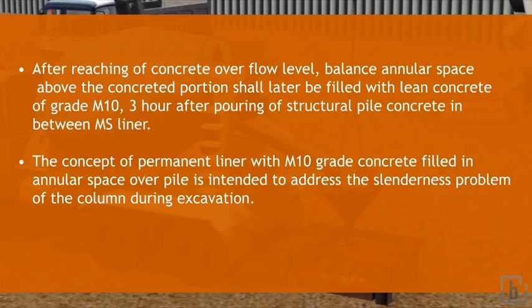Balanced annular space above the concreted portion shall later be filled with lean concrete of grade M10, three hours after pouring of structural pile concrete in between MS liner. The concept of permanent liner with M10 grade concrete fill in annular space over pile is intended to address slenderness problem of the column during excavation.